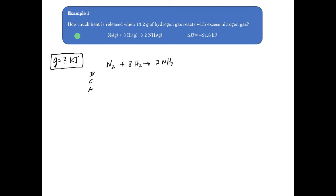The first example: we're looking for how much heat is released when 13.2 grams of hydrogen reacts with excess nitrogen. They give us the balanced equation along with the change in enthalpy. What I'm looking for here is heat, represented by Q, with units of kilojoules. Since it's a negative change in enthalpy, we know this is an exothermic process — heat is being released from the system to the surroundings. We're starting with 13.2 grams of hydrogen, and since nitrogen is in excess, we don't need to worry about it.